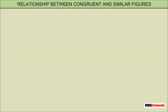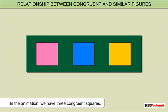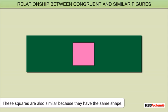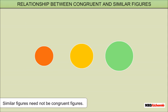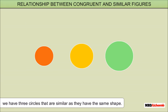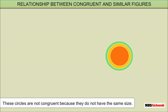Relationship between congruent and similar figures: All congruent figures are similar figures. In the animation, we have three congruent squares, which are also similar because they have the same shape. However, similar figures need not be congruent. For example, we have three circles that are similar as they have the same shape, but they are not congruent because they do not have the same size.